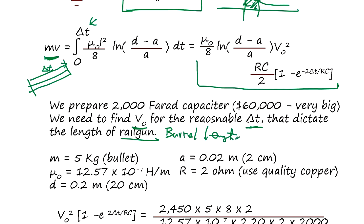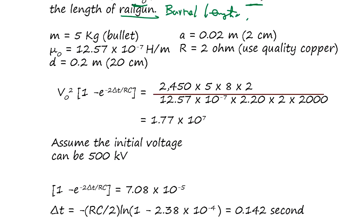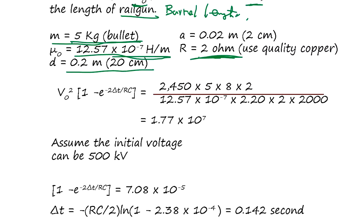You don't want a 100-meter barrel — it's too long to swing or change direction. Assuming bullet weight of 5 kg, conductor separation D of 20 cm, conductor radius of 2 cm, and resistance of only 2 ohms from thick copper, the equations must satisfy the target Mach 7 value.